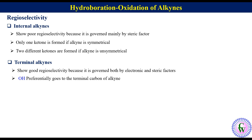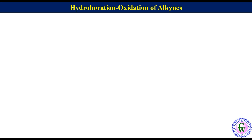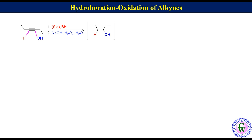These points will be more clear if we go through examples. The first example is hydroboration oxidation of hex-3-yne. This is an example of a symmetrical alkyne so there will not be any selectivity. Adding H on one alkyne carbon and OH on the other gives an enol which tautomerizes to the more stable keto form, which is hexan-3-one.